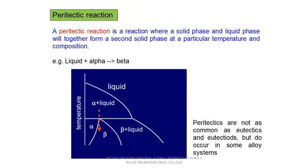There is also the peritectic reaction, where a solid phase and a liquid phase transform to a single solid phase. For example, an alpha solid phase plus a liquid phase transforms to a different solid phase, the beta solid phase. This reaction is also an invariant reaction, similar to the eutectic reaction. In peritectic reaction: liquid plus alpha transforms to beta. These kinds of reactions are not very common in every alloy, but occur in certain alloys.